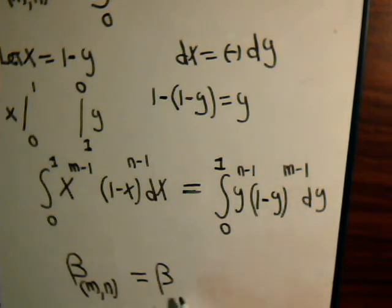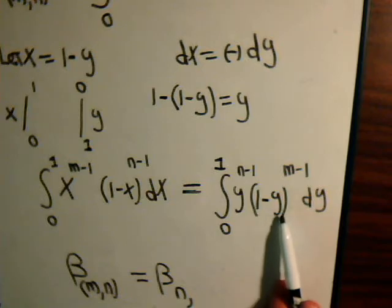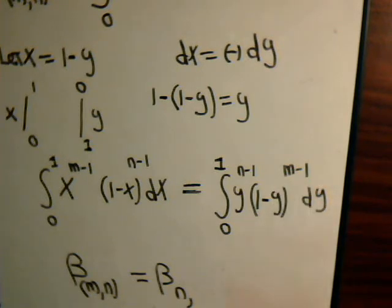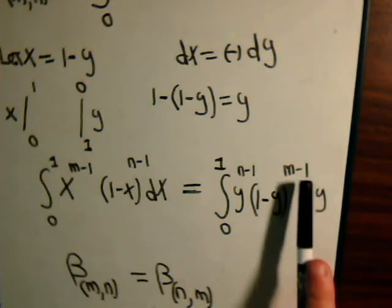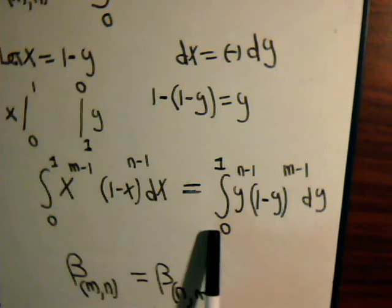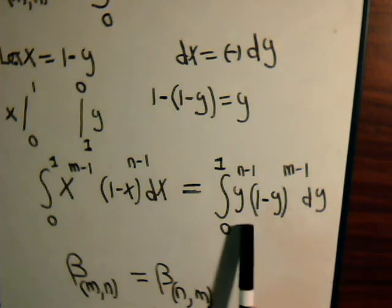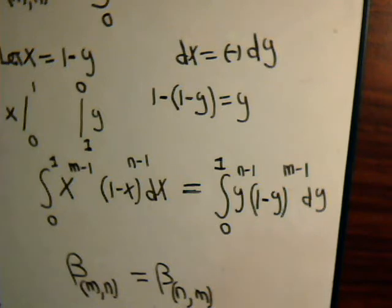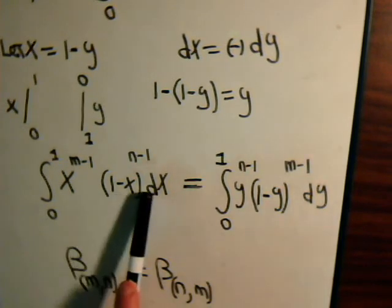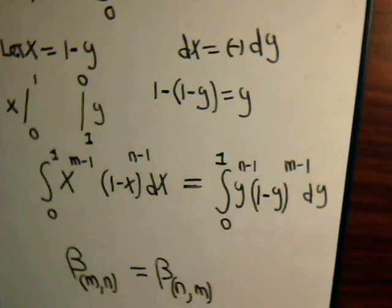Well over here, where we have exactly the same type of integral, only here we'd say this would be equal to the beta function. Now the first term here would be n minus 1 plus 1, so that's going to be beta(n). And for the (1 minus y) term, this exponent plus 1 is going to be the second term here, and that's just going to be m. So this integral is the definition of beta(n,m), but that also equals this integral which is beta(m,n).